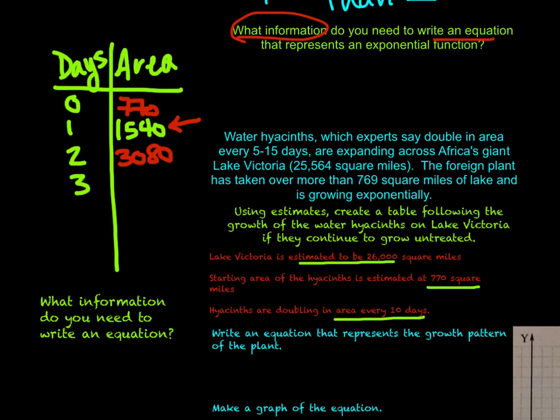The next 10 days will have gone by, so now we're at about a month, 30 days. We have 6,160 square miles that have been taken up by the plant. 40 days would give us 12,320 square miles, so we're almost at half the size of the lake, which is pretty substantial. If we're at half the size of the lake, we can only guess. If we're doubling each time, 10 more days go by, we are pretty much covering the lake. We are at 24,640 square miles.